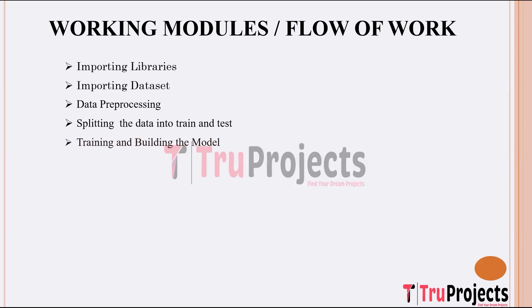This stage involves training deep learning models, particularly convolutional neural networks, on the training data. The models are constructed and optimized to accurately identify influential users based on the analysis of visual content. After training, their performance is compared using evaluation metrics such as accuracy, precision, recall, and F1 score. This comparison helps in selecting the most effective model for predicting influential users.